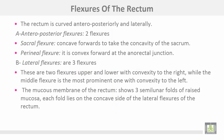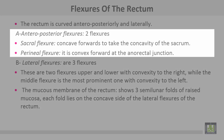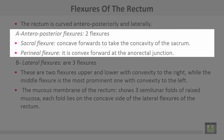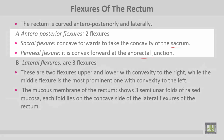Flexures of the rectum: the rectum is curved anteroposteriorly and laterally. The anteroposterior flexures are two. Number one, the sacral flexure is concave forwards, taking the concavity of the sacrum. Number two, the perineal flexure is convex forward at the anorectal junction.